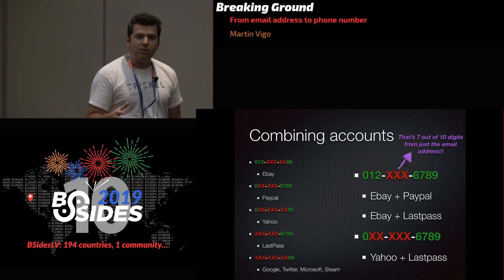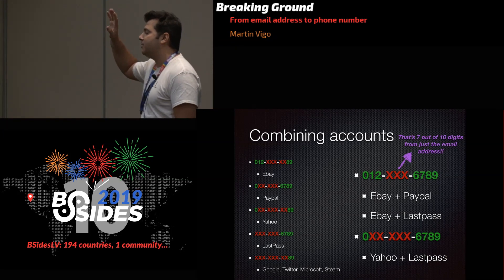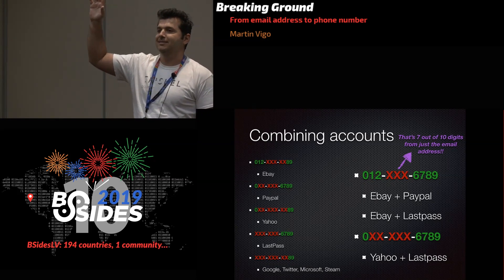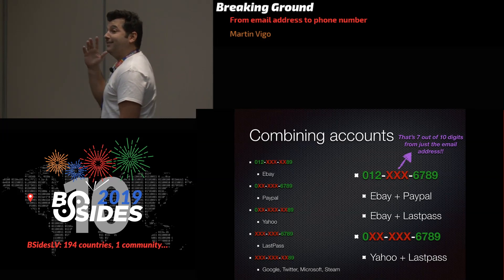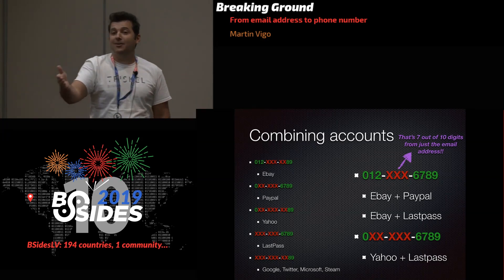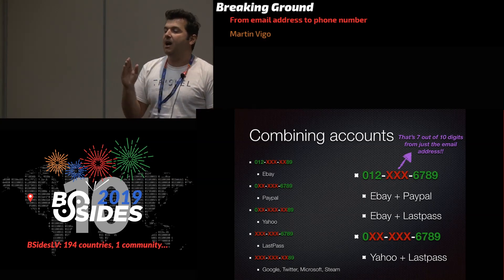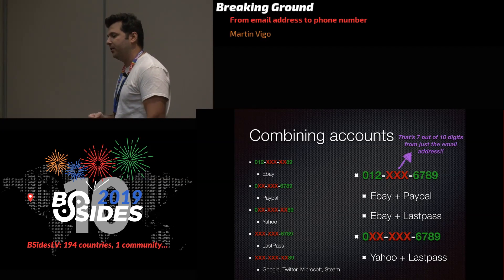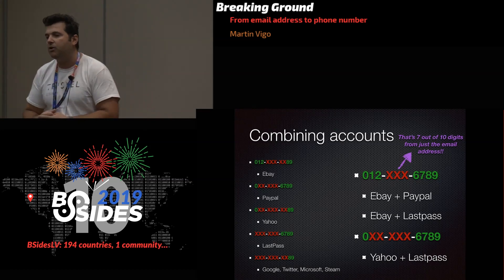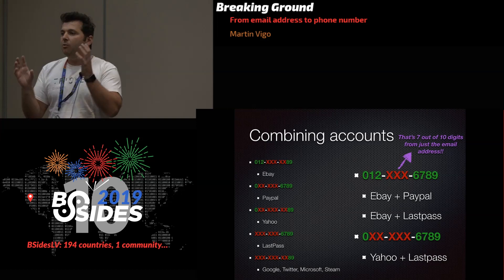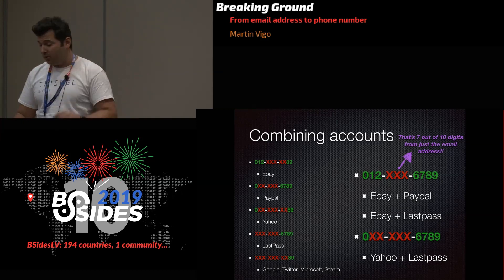The true power comes from combining services. Who has an eBay and a PayPal account? That's a lot of people. With just an email address, if I reset your password on those two services, I get seven out of ten digits of your phone number. eBay and LastPass gives you the same. Yahoo and LastPass gives you the first one and the last four. If we start combining accounts, we get even more digits just from your email address.